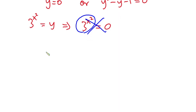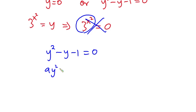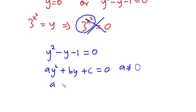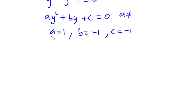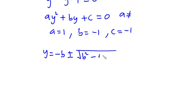Now let's focus on y squared minus y minus one equals zero. Comparing with the general quadratic equation a·y² + b·y + c = 0, where a is not zero, we can see that a equals one, b equals negative one, and c equals negative one. Plugging these into the quadratic formula — y equals negative b plus or minus square root of b squared minus 4ac, all over 2a — we get y equals one plus or minus square root of 5, over 2.